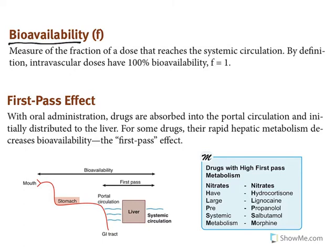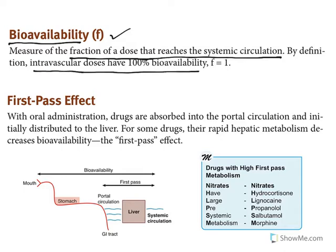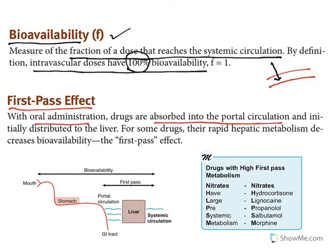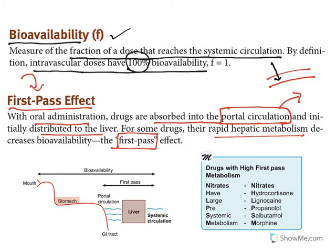An important concept is bioavailability — the fraction of a drug dose that reaches the systemic circulation. If you take 500 mg of a drug, how much of that 500 mg actually gets into systemic circulation is given by bioavailability. For intravenous doses, bioavailability is 100% because you are directly injecting into the blood vessel. Oral doses will always have less than 100% bioavailability. There is something called the first pass effect: with oral administration, drugs are absorbed into portal circulation — the blood going to the liver — and for some drugs they get metabolized there.